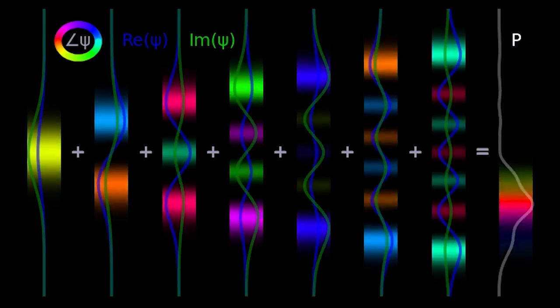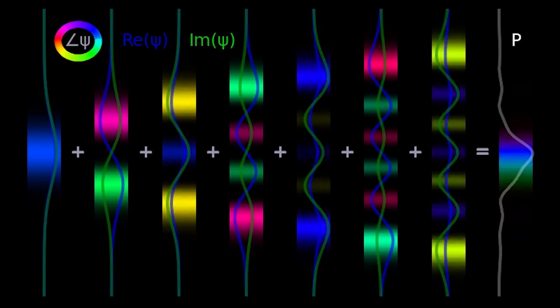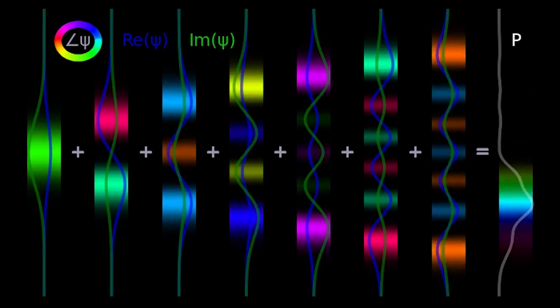The particle's probability density is shown by the white curve on the right side of the screen. You can see that the particle does not have a definite position, but rather is smeared out a little bit. That's just how it is at the quantum level.